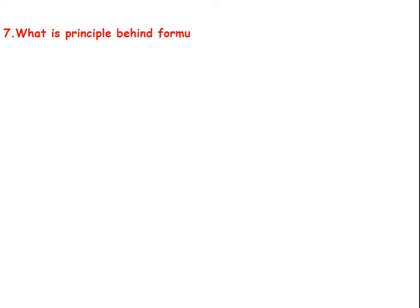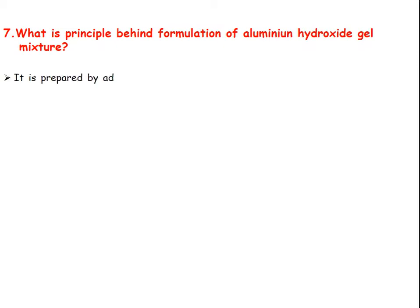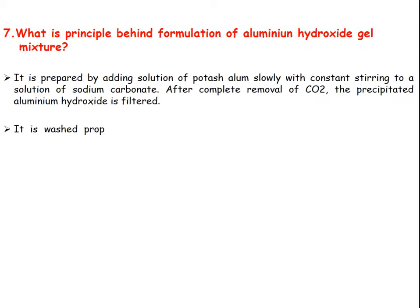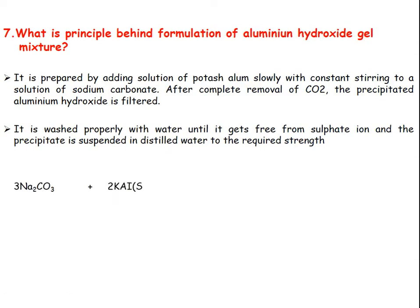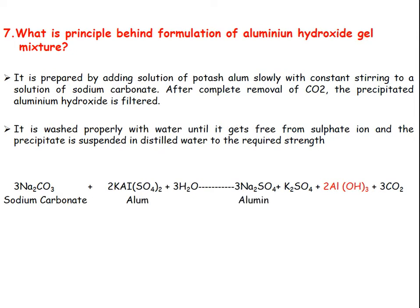Q6: What is the principle behind formulation of Aluminium Hydroxide Gel? — It is prepared by adding a solution of alum slowly with constant stirring to a solution of sodium carbonate. After complete removal of carbon dioxide, the precipitated aluminium hydroxide is filtered and washed with water until free from sulphate ions. The precipitate is then suspended in distilled water to the required strength. The reaction uses sodium carbonate and alum to form aluminium hydroxide.